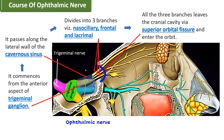To recap: the ophthalmic nerve arises from the anterior aspect of the trigeminal ganglion, runs along the lateral wall of the cavernous sinus, and at the anterior end of the cavernous sinus divides into three branches — the nasociliary, frontal, and lacrimal. All three branches separately pass through the superior orbital fissure to enter into the orbit.